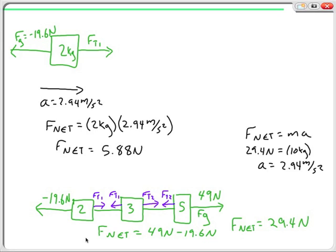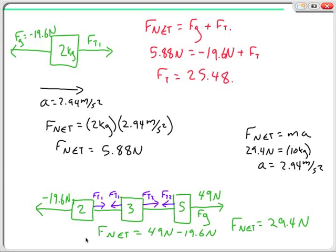Now that I have that information, I'll go up and sum my forces, and I'll say F net is equal to the Fg that's there that's actually pointing to the left plus FT1, and I'll find that 5.88 Newtons is equal to negative 19.6 Newtons plus FT, which means that my FT must be equal to 25.48 Newtons, that's the FT1. I have that piece of information.